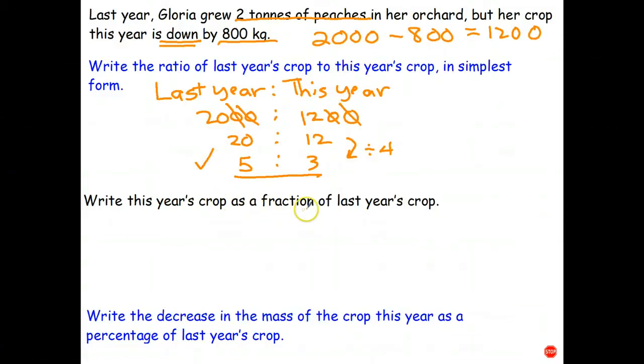Write this year's crop as a fraction of last year's crop. So that's my numerator and that's my denominator. This year's crop was 1200 kilograms. Last year's crop was 2000 kilograms. It doesn't say to do it, but implied is in simplest form. So I can knock off two zeros. That gives me 12 is to 20. And both of those I can divide by 4. 12 divide 4 is 3. 20 divide 4 is 5. And the answer is 3 fifths.